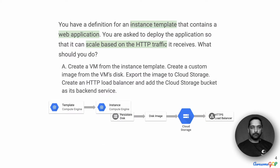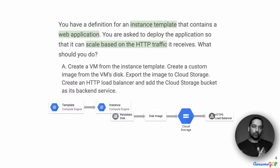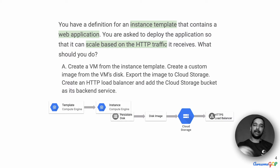Let's first try option A: create a VM from the instance template, create a custom image from the VM's disk, export the image to cloud storage, and create an HTTP load balancer adding the cloud storage bucket as the backend service. So from the compute engine template we create a VM, create an image of the disk, put it on cloud storage, and set that as a backend for the HTTPS load balancer.